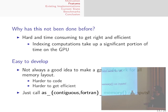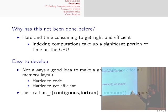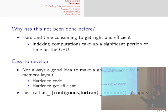So why has this not been done before? The main reason is that it's hard and time-consuming to get right and also efficient. Because even if you support everything but it's really slow, nobody is going to use it. The main challenge is that indexing computation on GPUs takes up a significant portion of time compared to CPUs. But even so, we don't want this to be hard to develop for. So if you're writing a kernel and don't want to deal with generic strides or broadcasting, we provide a convenience function where you can call 'as contiguous' or 'Fortran memory', and then assume contiguous layout for the rest of your kernel.